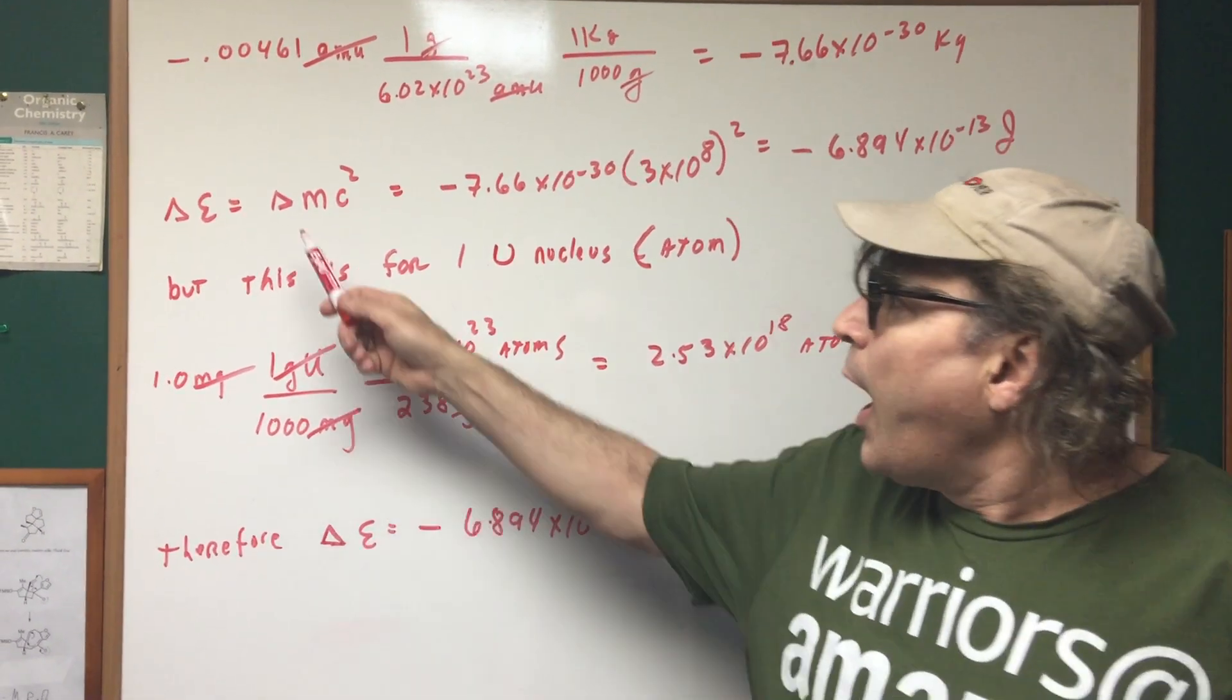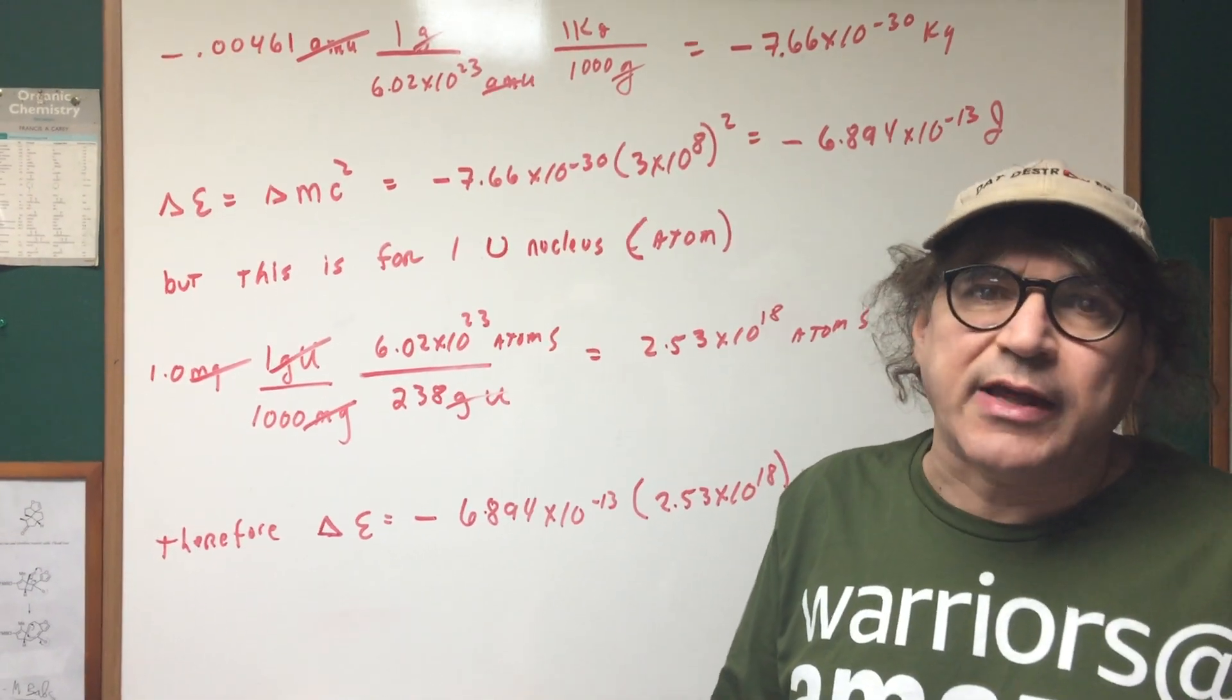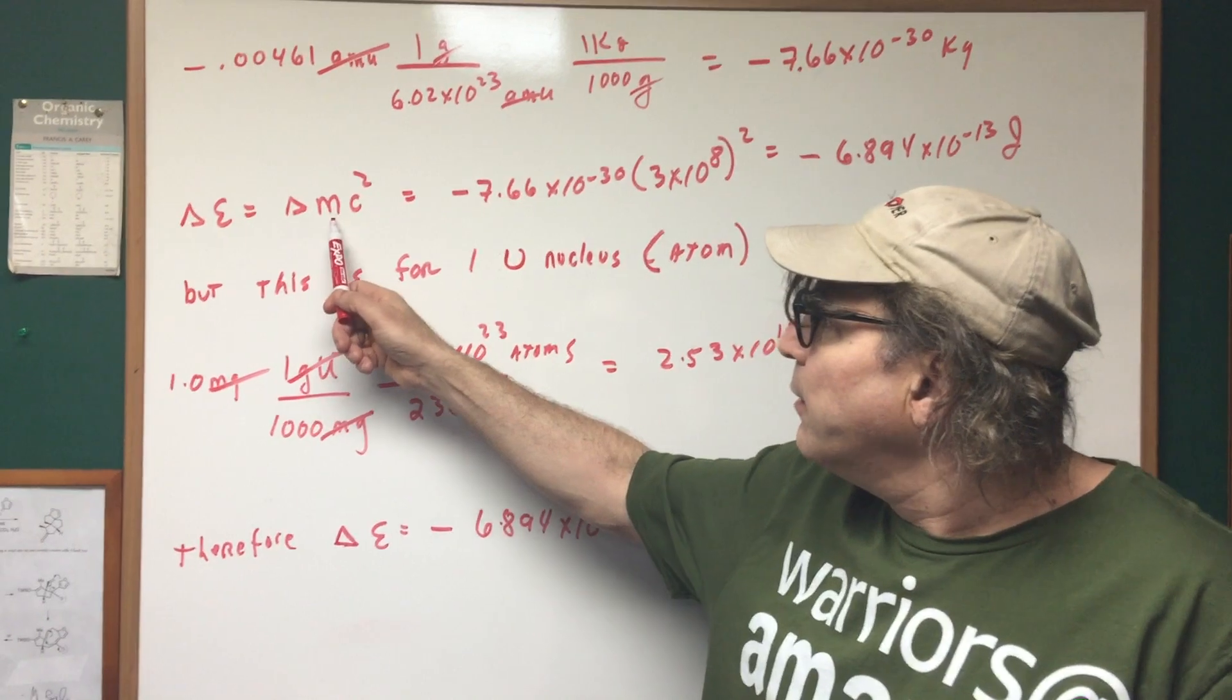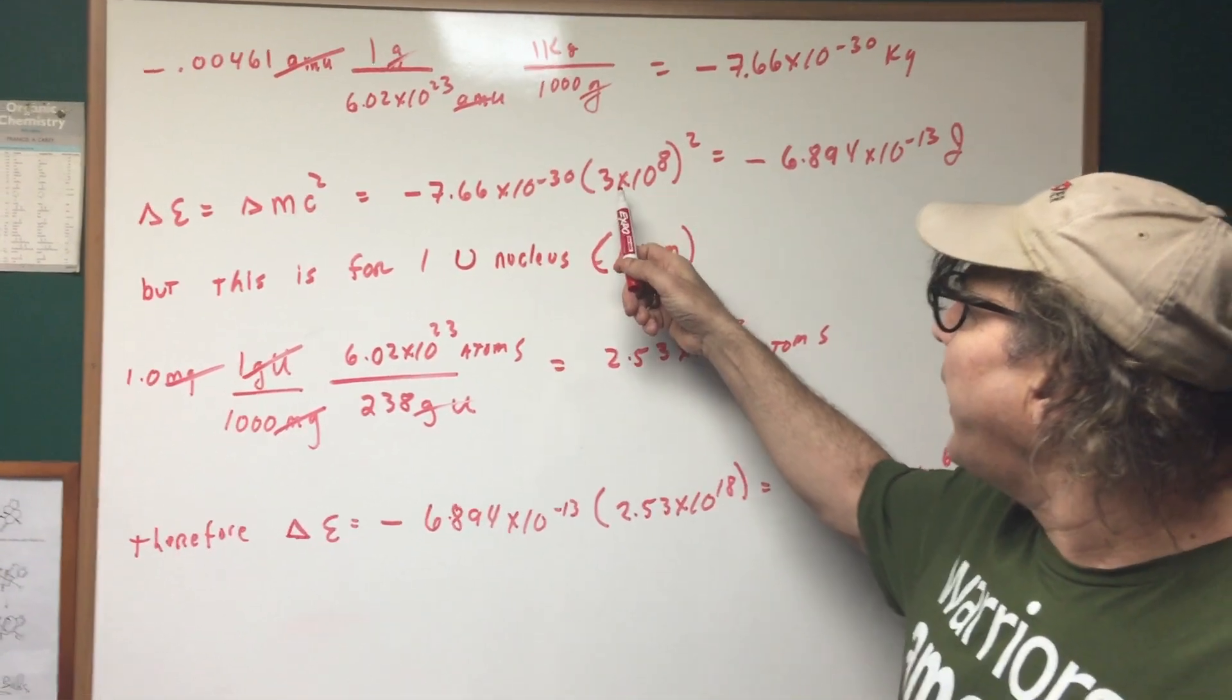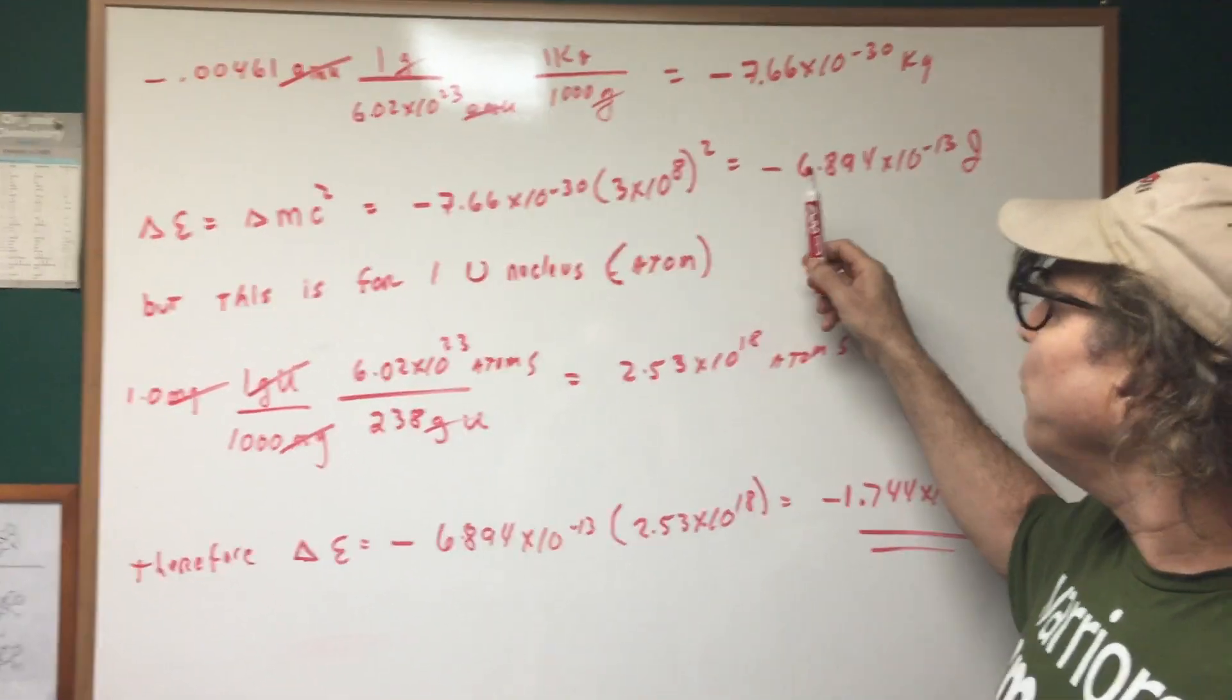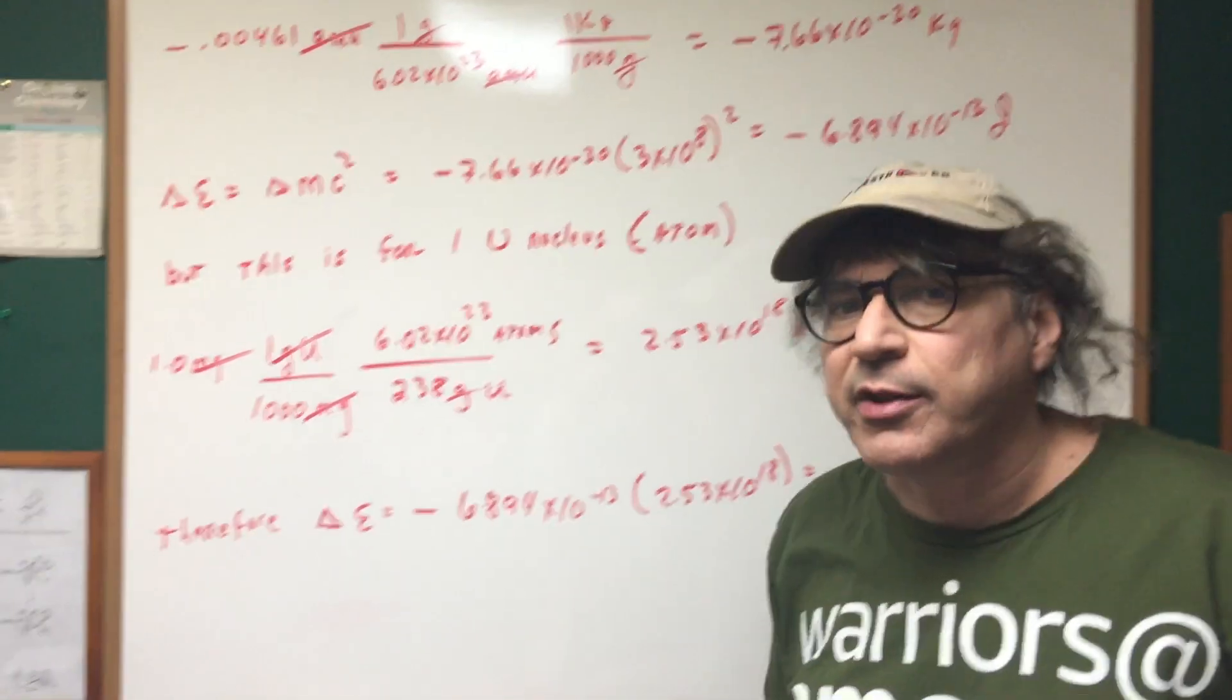Now what? I then use that mass and I plug it into what is known as the Einstein equation. And as you can see, delta E is delta MC squared. So there's the mass that we just got. The speed of light is a constant that's given us 3 to the eighth. We square it. And we get negative 6.894 to the minus 13th joules.